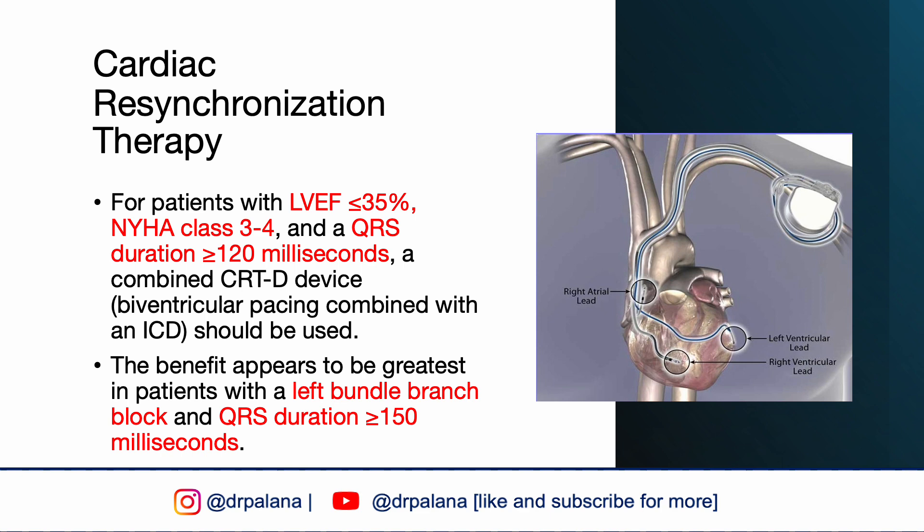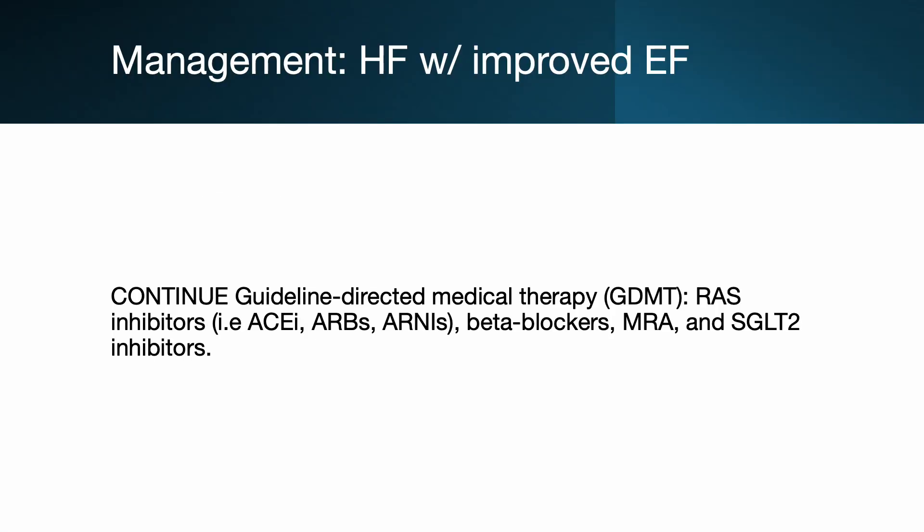Choose CRT for patients with LVEF less than 35%, NYHA class 3 to 4, with a QRS duration of at least 120 milliseconds. The benefit appears greatest in patients with a left bundle branch block and QRS duration of at least 150 milliseconds. With implementation of GDMT, some patients may recover cardiac function and LVEF may improve to more than 40% or even normalize.